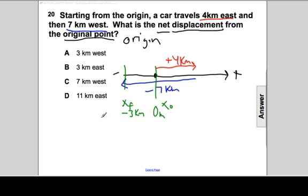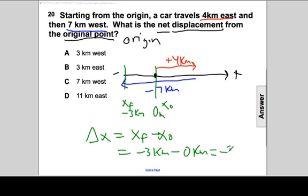And to apply the formula for displacement, displacement will be equal to X F minus X naught. So that is equal to my final location, negative three kilometers, minus zero kilometers, that's my starting point. And the net displacement is negative three kilometers or three kilometers to the west because the west indicates negative.